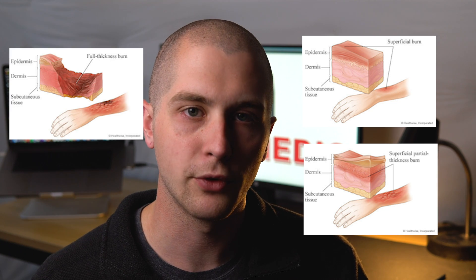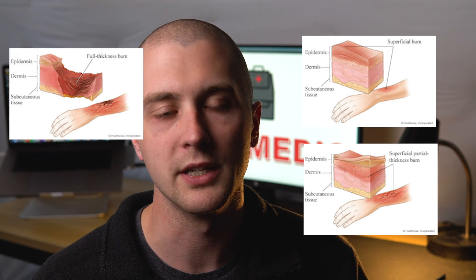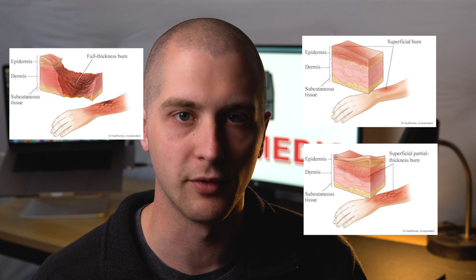Your burn classifications used to go by first degree, second degree, third degree, and fourth degree, with fourth degree being the most serious. They've since moved away from that terminology toward more plain language. So what used to be your first degree is now called superficial. Your second degree is partial thickness. Your third degree is full thickness. And your fourth degree is full thickness with deep tissue involvement.